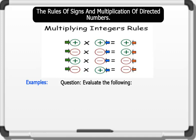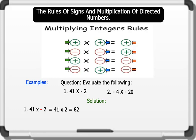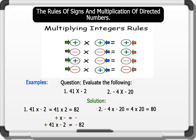Evaluate the following. 1. 41 times minus 2. 2. Minus 4 times minus 20. Solution. 1. 41 times minus 2 equals 41 times 2, which gives us 82. Remember that there is an invisible plus sign in 41. Multiplying the signs: according to the rule, plus times minus will give us minus. Therefore, 41 times minus 2 equals minus 82. 2. Minus 4 times minus 20 equals 4 times 20, which gives us 80. Multiplying the signs: according to the rule, minus times minus will give us plus. Therefore, minus 4 times minus 20 equals plus 80.